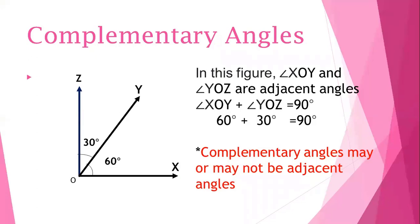Here we are shown some complementary angles. In this figure, angle XOY and angle YOZ are both adjacent angles. Angle XOY is 60 degrees and angle YOZ is 30 degrees. When we add 60 plus 30, we get 90 degrees, which matches our definition of complementary angles — the sum of the two angles should be 90 degrees.